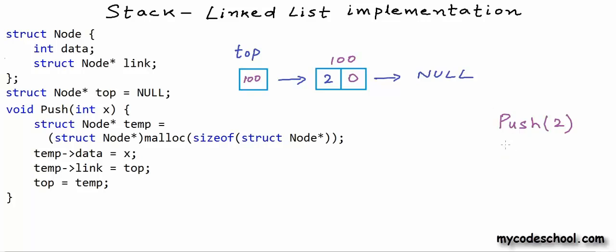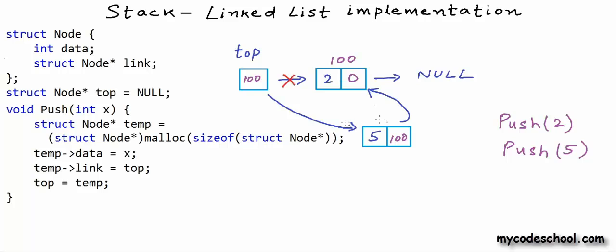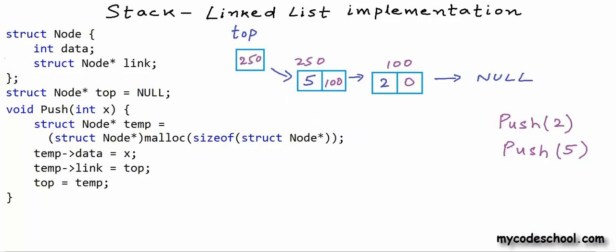Let's do one more push — let's say I want to push number 5 onto the stack. Again, a node will be created, we set the data, first point this node to the existing top, then make the top pointer variable point to this new node. Let's say the address of this node is 250, so the address in variable top will be set as 250. After this second push, this is how my stack will look. Top here is a global variable, so we do not need to pass it as argument to functions — it is accessible to all the functions. In an object-oriented implementation, it can be a private field and we can set it as null in the constructor.